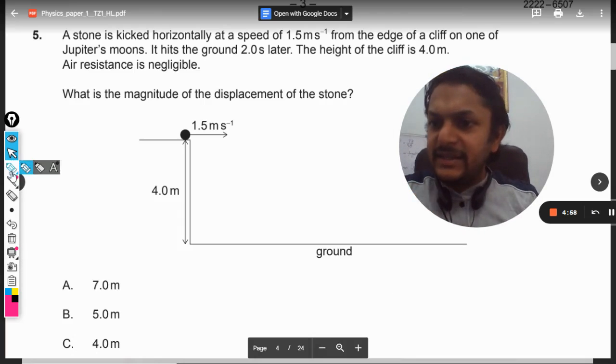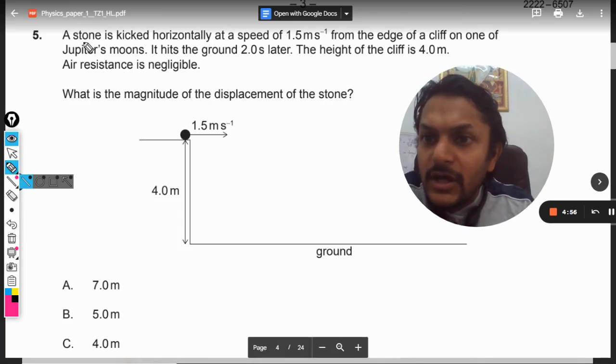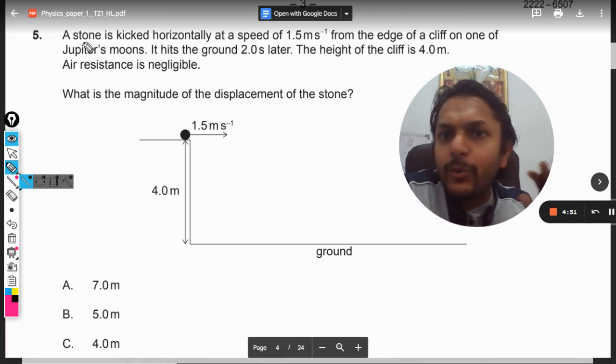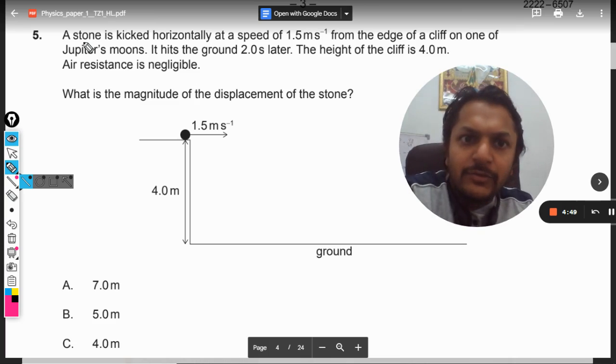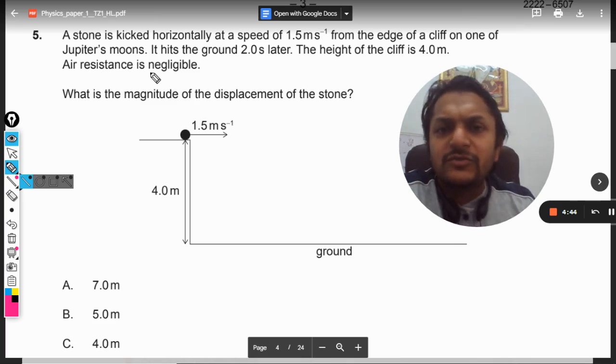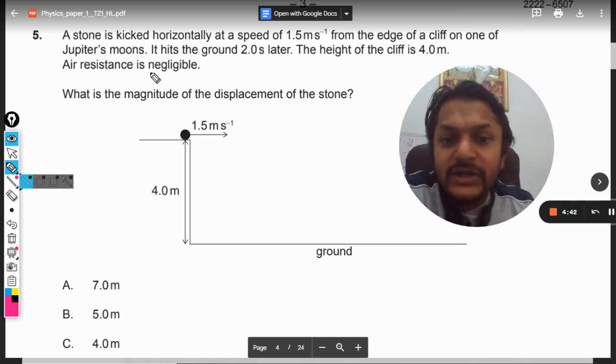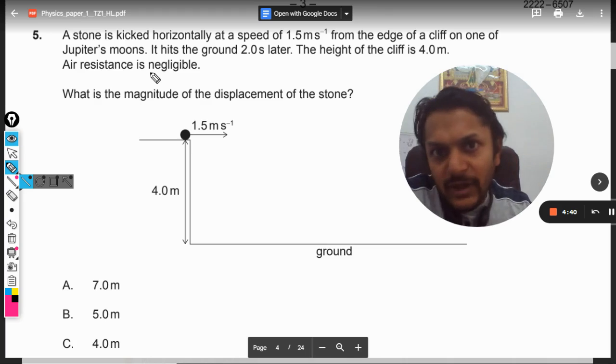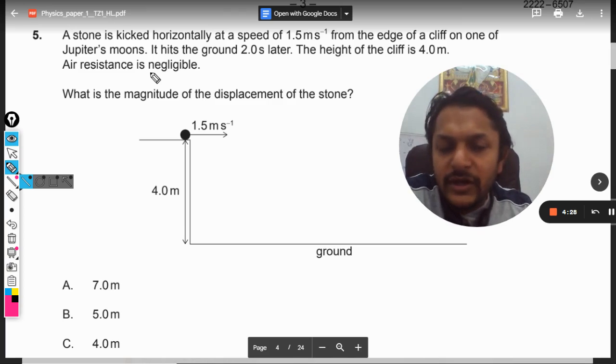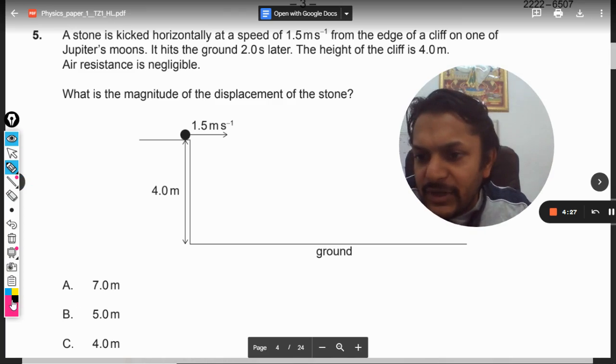Okay dear students, let us see what is there in this question. A stone is kicked horizontally at a speed of 1.5 meters per second from the edge of a cliff on one of Jupiter's moons. Why are we using Jupiter's moon? Because we don't know what the gravity is, and that's why they're trying to confuse us. It hits the ground two seconds later. The height of the cliff is given as 4 meters. Air resistance is negligible. What is the magnitude of the displacement of the stone?